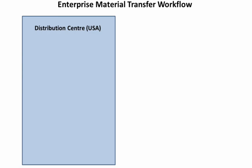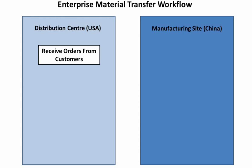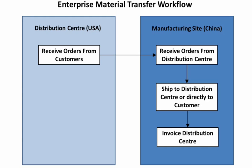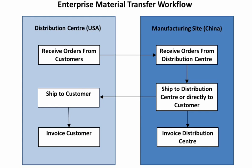Enterprise Material Transfer Workflow. Let's look at a sample business process workflow where using EMT functionality will increase efficiency and reduce overhead. A company has a head office or distribution center in the United States and a manufacturing facility in China. First, it enters orders into the U.S. database. Second, copies them into the Chinese database, then processes and ships them in the Chinese database, and keys in shipment information into the U.S. database to close the orders and invoice customers.